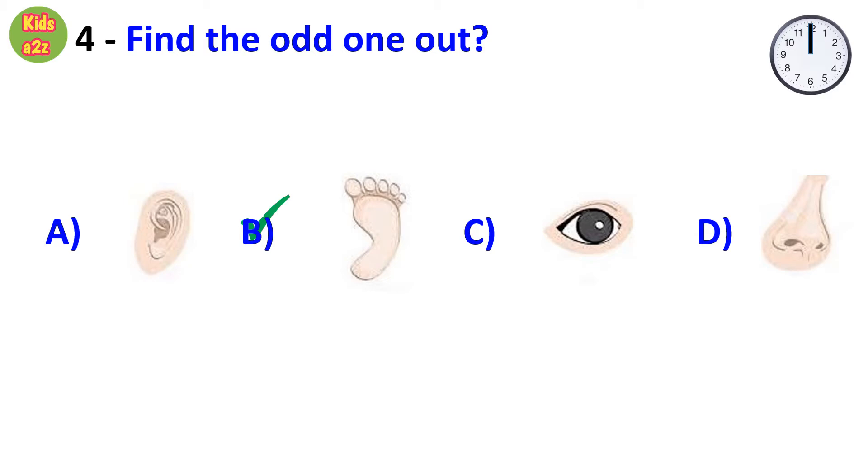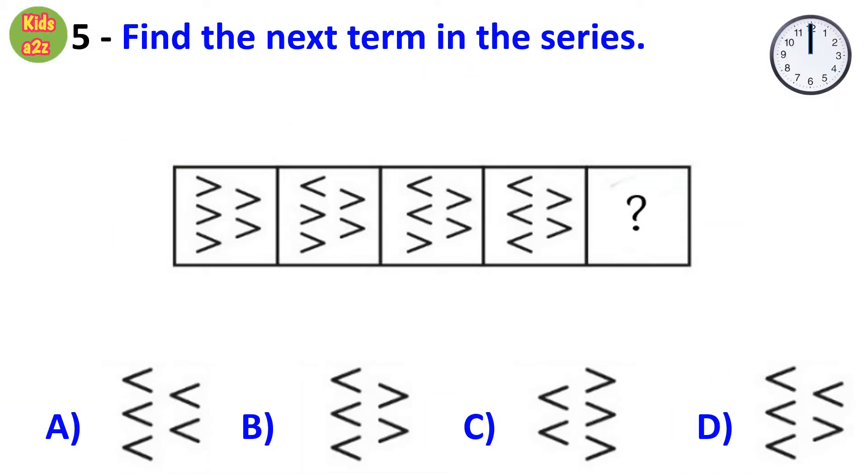Question number 5: Find the next term in the series. Answer is option D, because here each time one new symbol gets flipped in the next image. Hence, option D is the answer here.